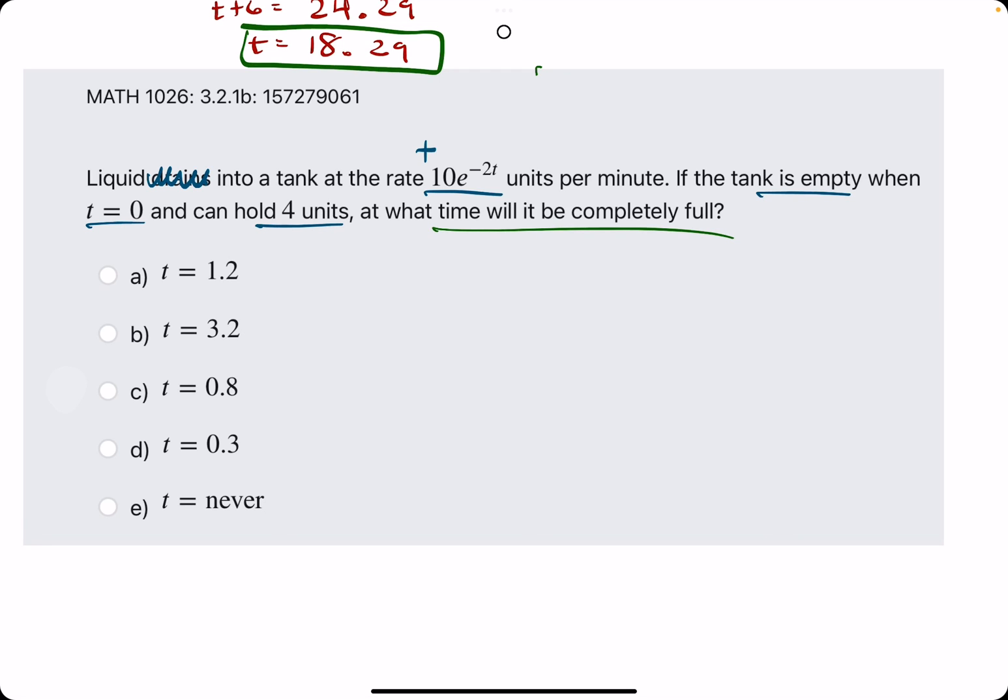They say if the tank is empty at the start but can hold four units, when will it be completely full? This example is probably the easier one. I don't think you have to worry about tacking on negatives. Let's see what we can do here. We're still integrating from zero to sometime t. We're trying to find the t value when it fills up to four units.